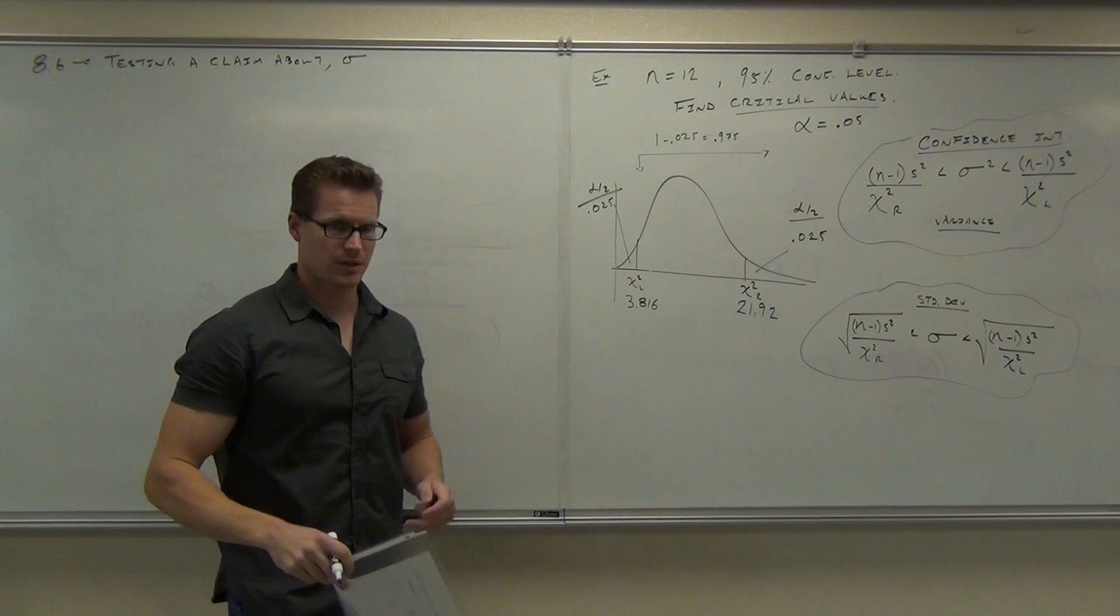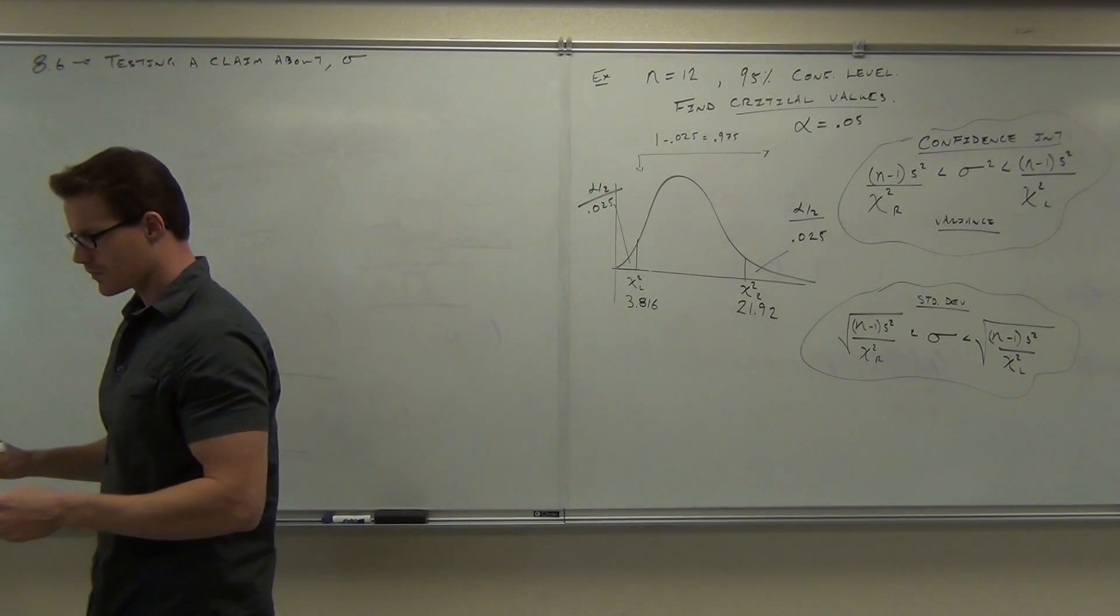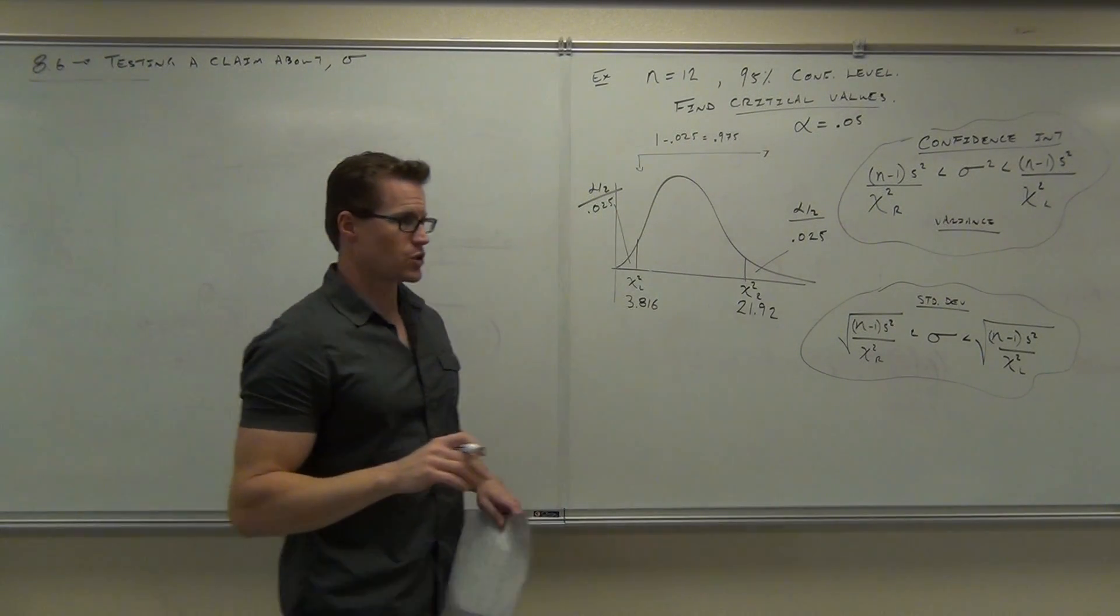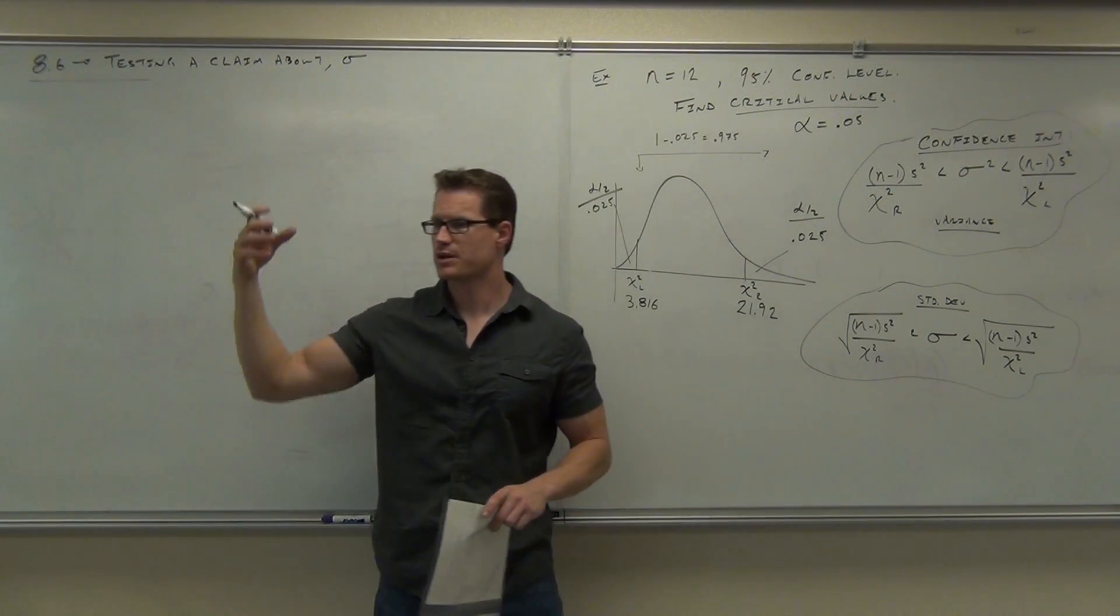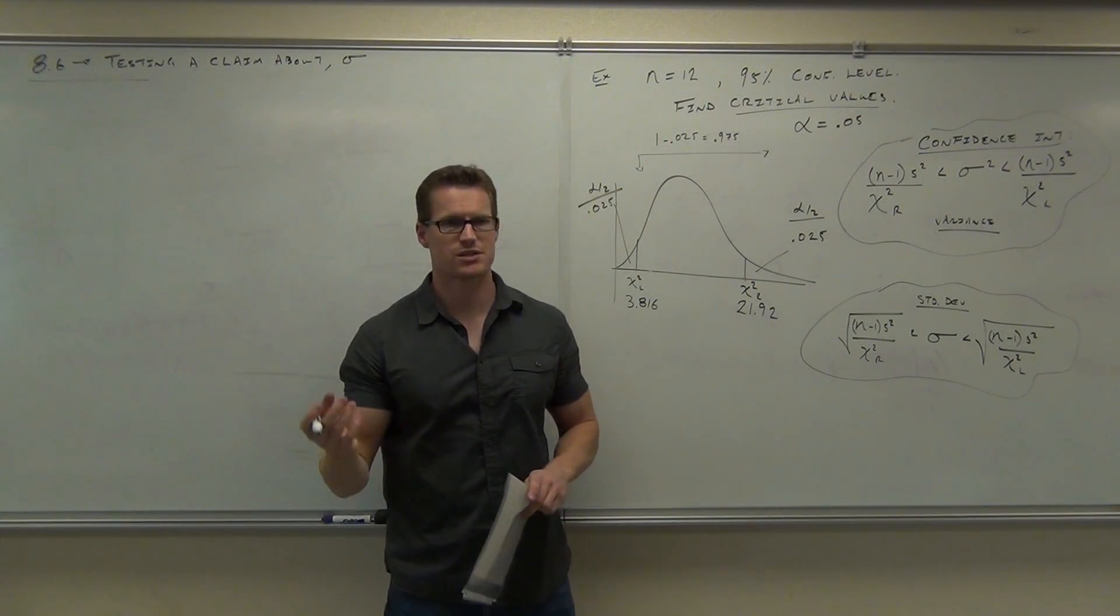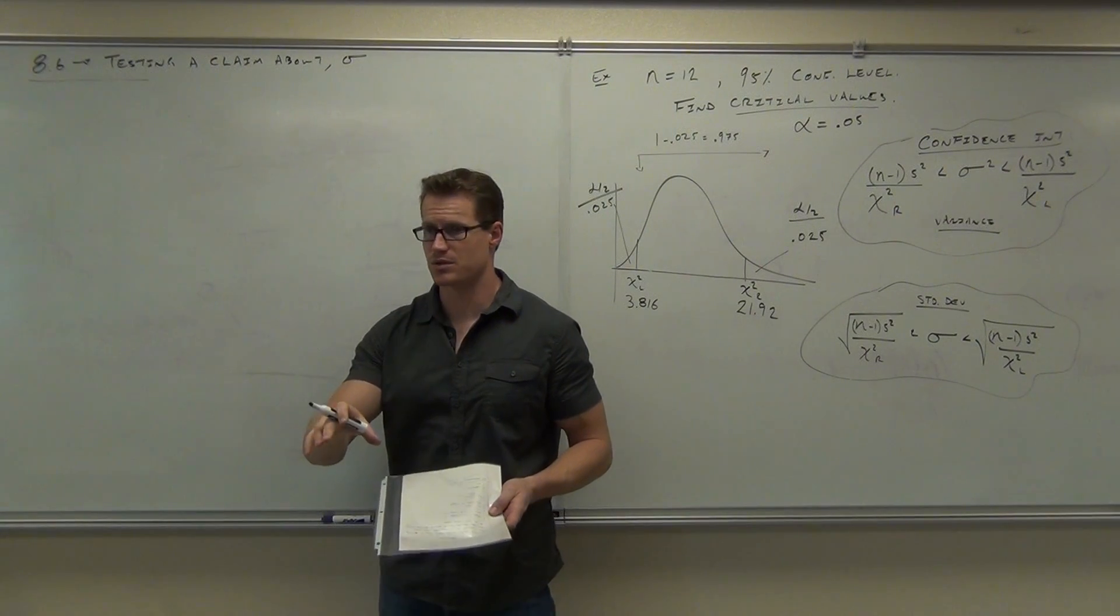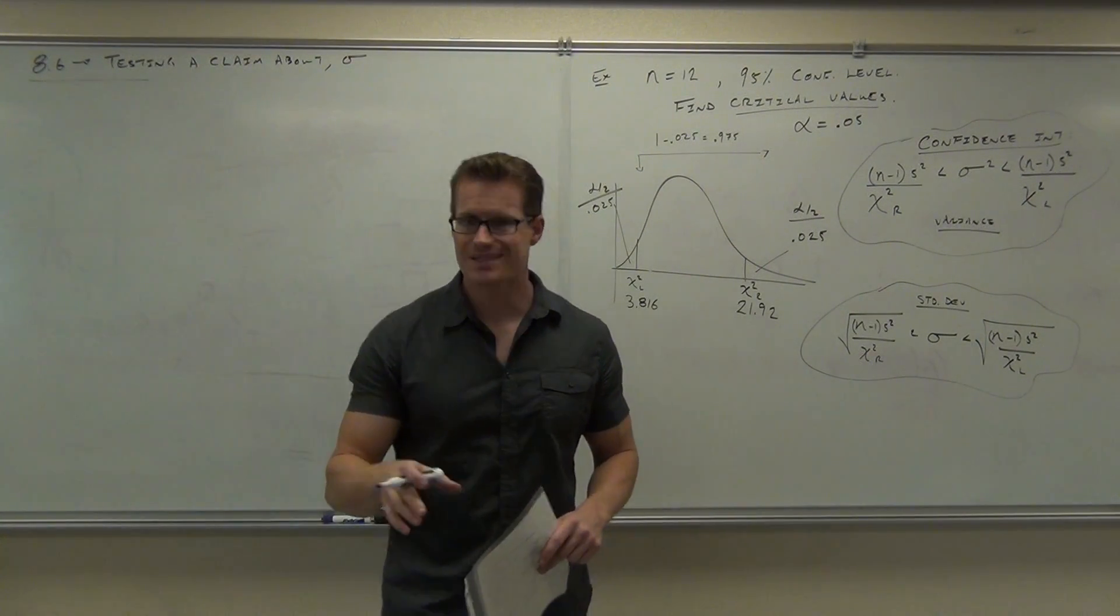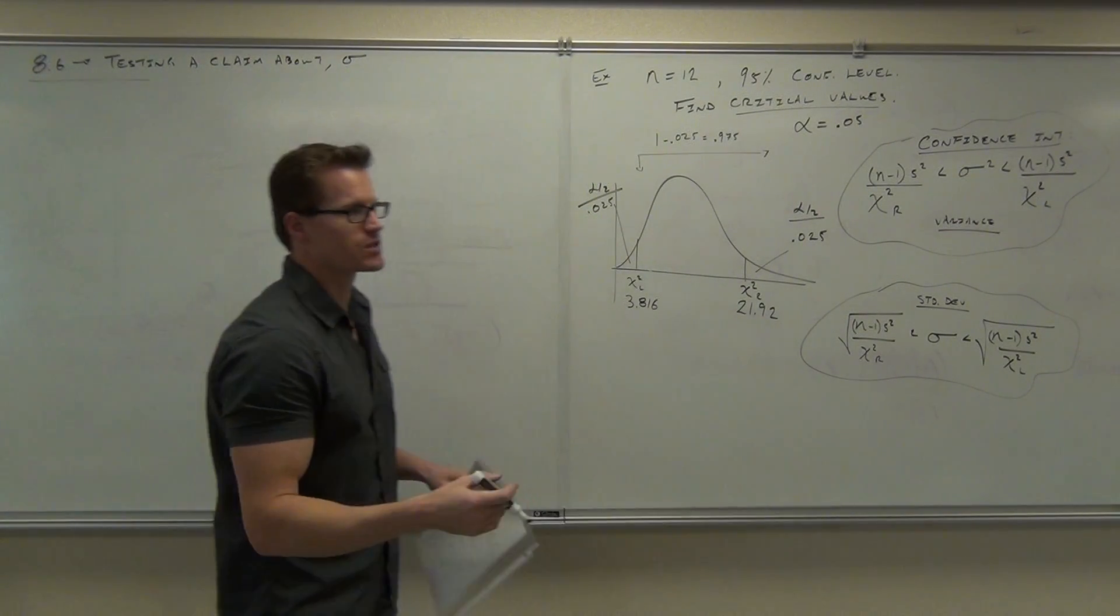Testing a claim about population standard deviation. Well, there's really only one thing we need to know. I just told you the steps are the same. Step 1 is going to be your claim, your H of 0, H of 1. Step 3 is going to be your alpha. Step 4 is going to be your test statistic. Step 5 is going to be a picture. 6 is going to be a decision. 7 is going to be interpretation. Exactly the same thing you've been doing, just like on your homework. The only difference is we have a different table. It's not a Z, it's not a T, it's a chi squared. And to use that, we have a different test statistic.